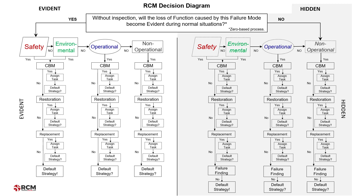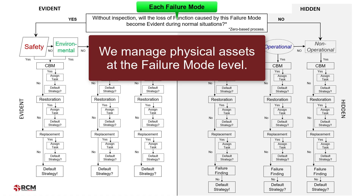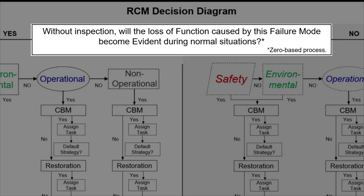Here's the framework of an RCM Decision Diagram. Recall that we said we manage physical assets at the failure mode level. Therefore, we're going to take each failure mode from our failure modes and effects analysis through the RCM Decision Diagram to analyze it. The RCM Decision Diagram may appear complex at first sight, but as we go through it, you will see that it isn't. Let's start with the first question.